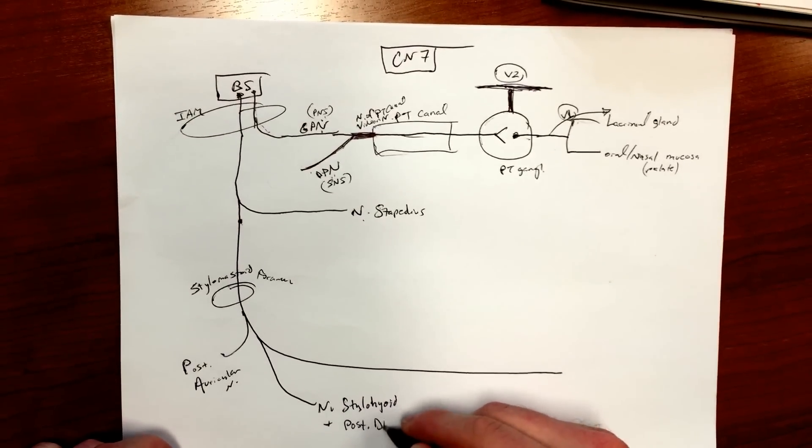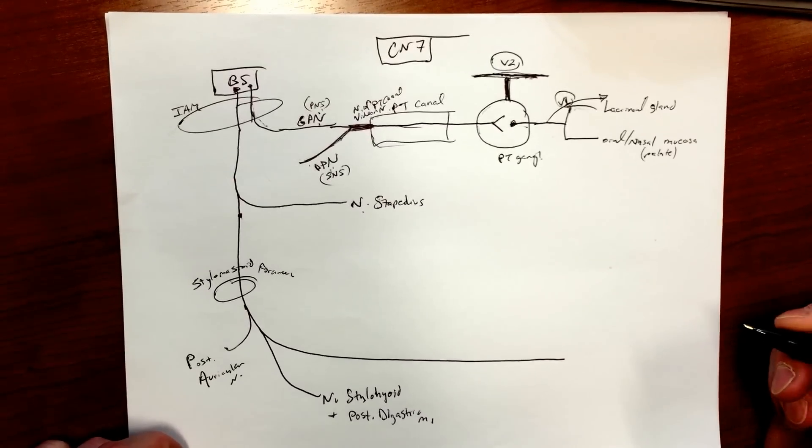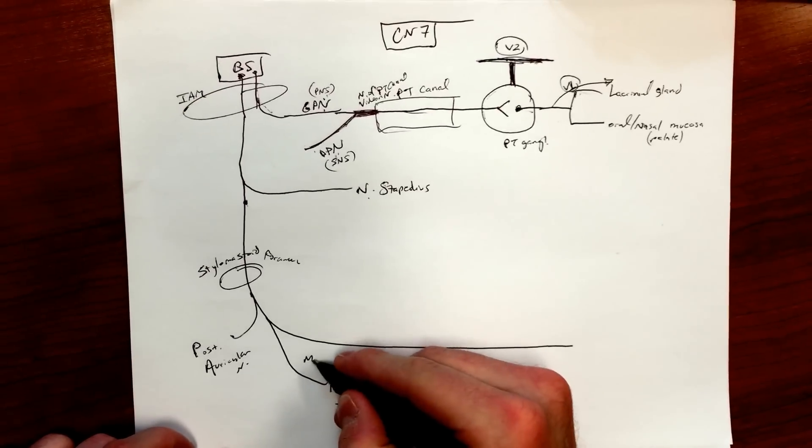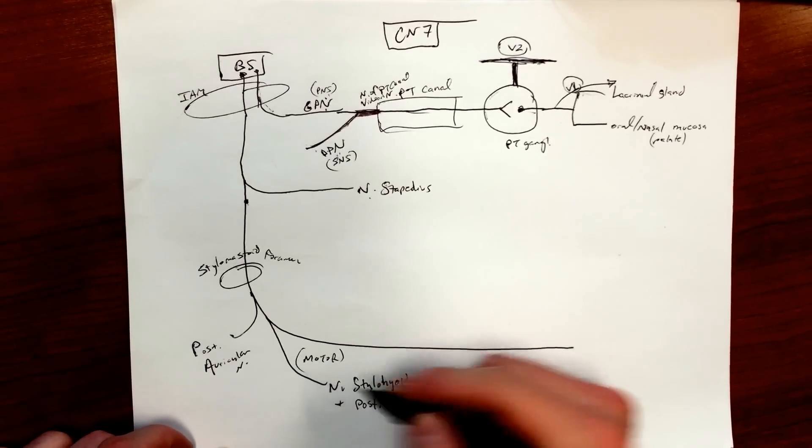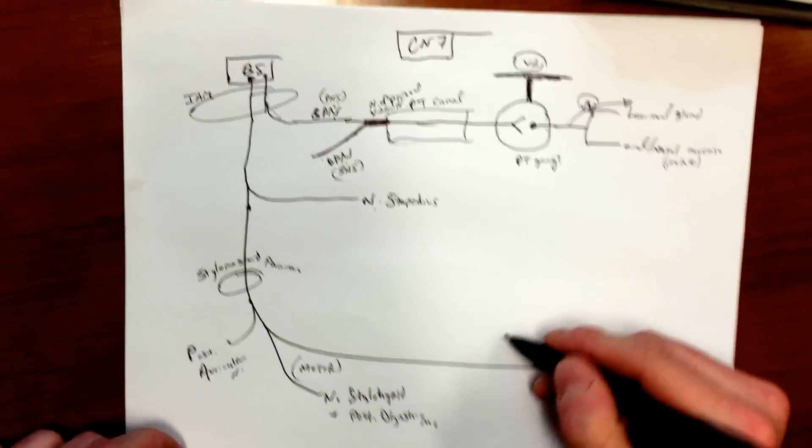And then you're gonna have nerve to stylohyoid and you're gonna have posterior digastric muscle. So you can keep all those muscles in mind - those are all motor. And it's color-coded in the picture, we can see that in a sec.